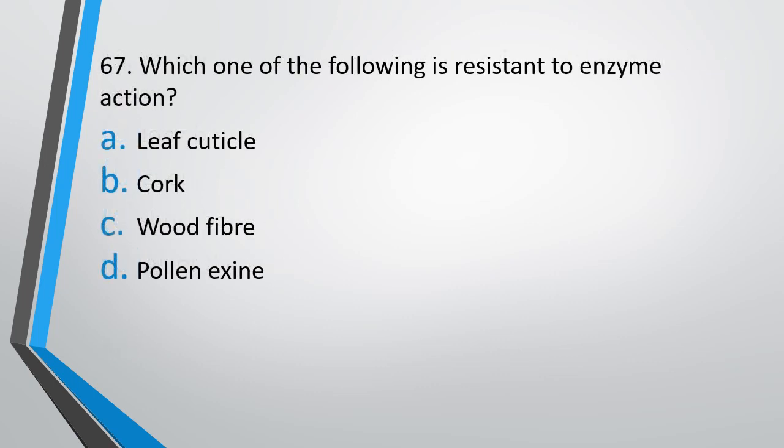Question number 67. Which one of the following is resistant to enzyme action? The correct answer is option D, that is pollen exine.